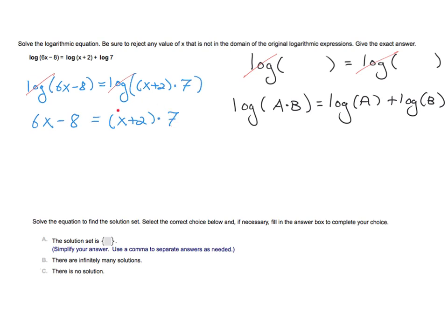I don't like the seven here. I think I'm going to multiply it into the parentheses to give me seven x and then 14. So if I distribute the seven in, what I have is six x minus eight is equal to seven x plus 14.